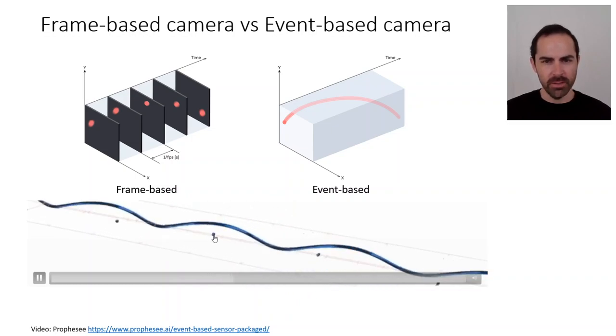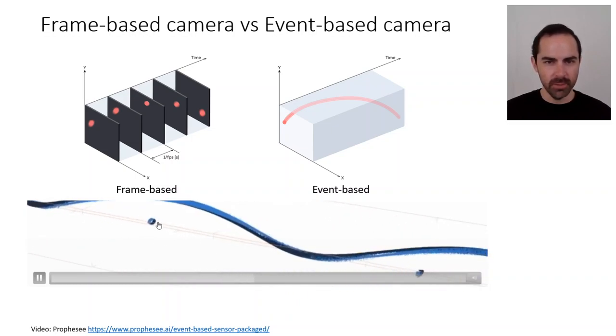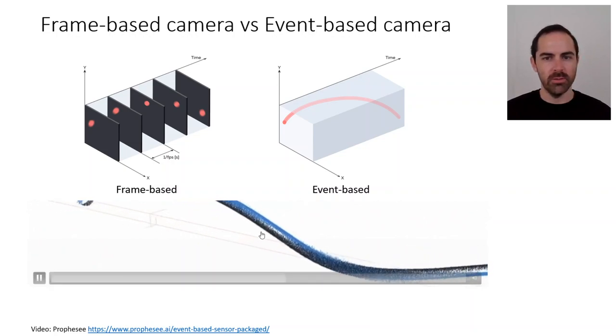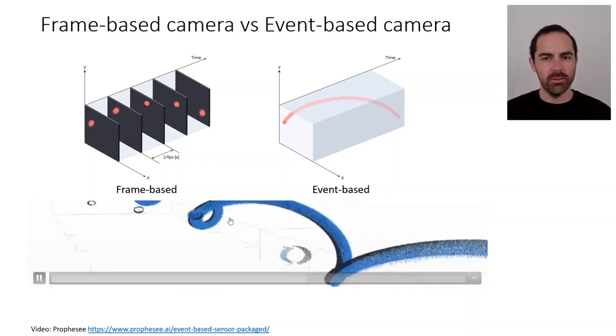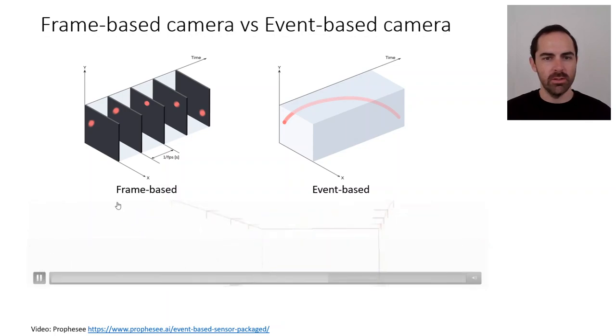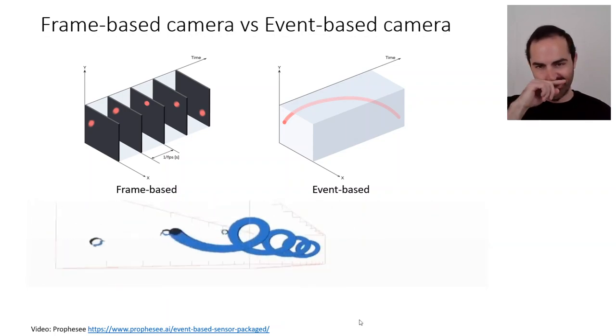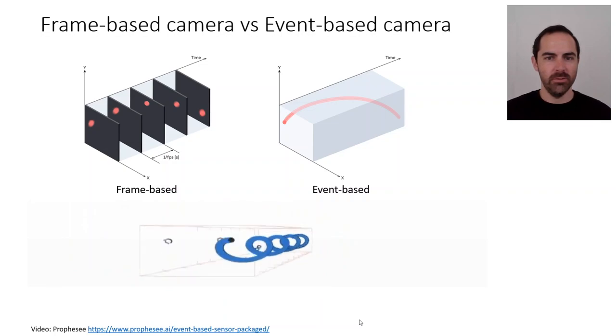And on the left, the frame-based, it's more like an illustration because a frame would occupy and would not allow us to see the spiral on the right. So here is just showing a sample of the events in that short amount of time.